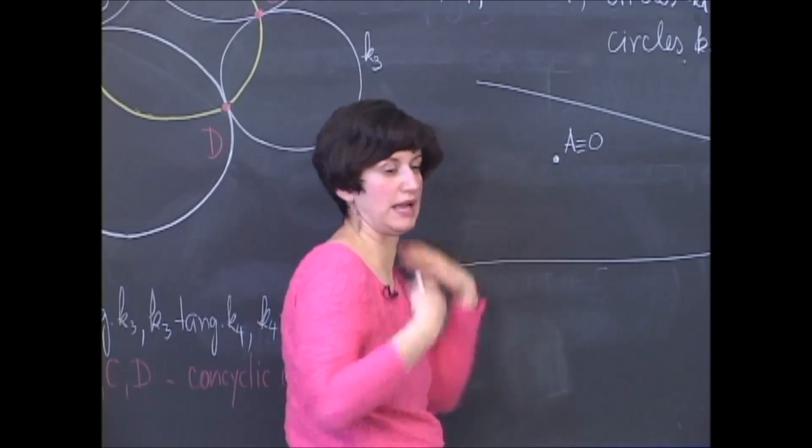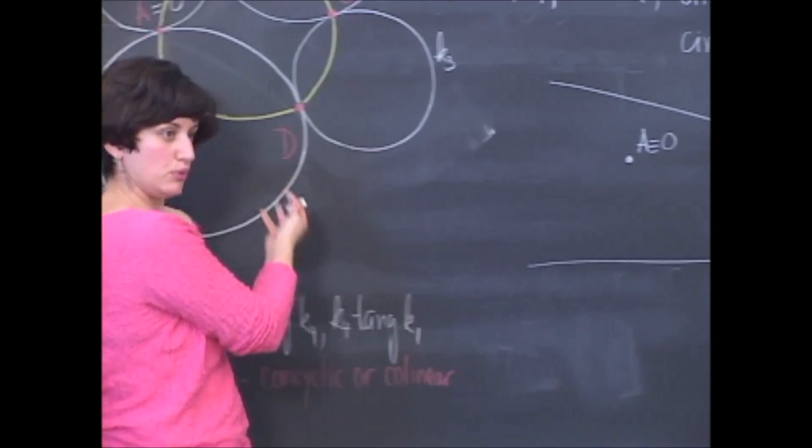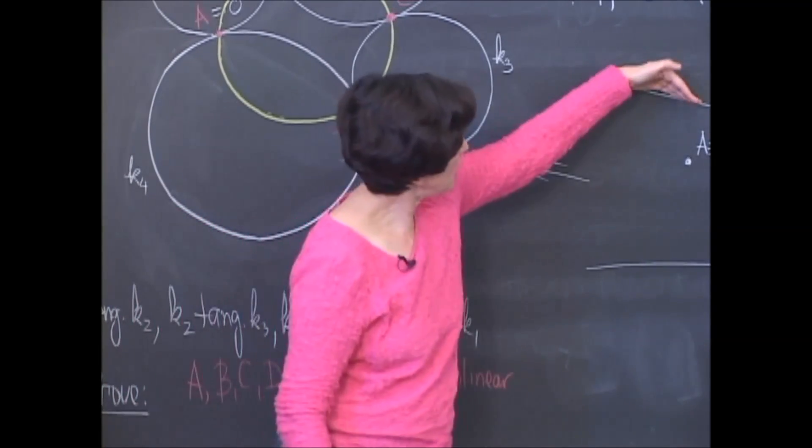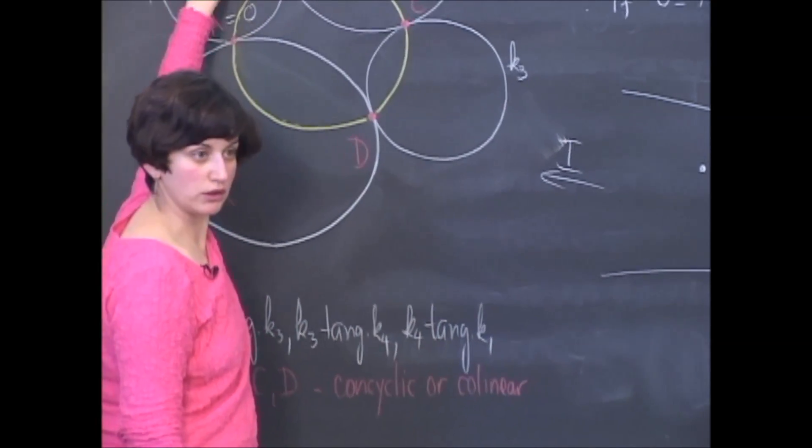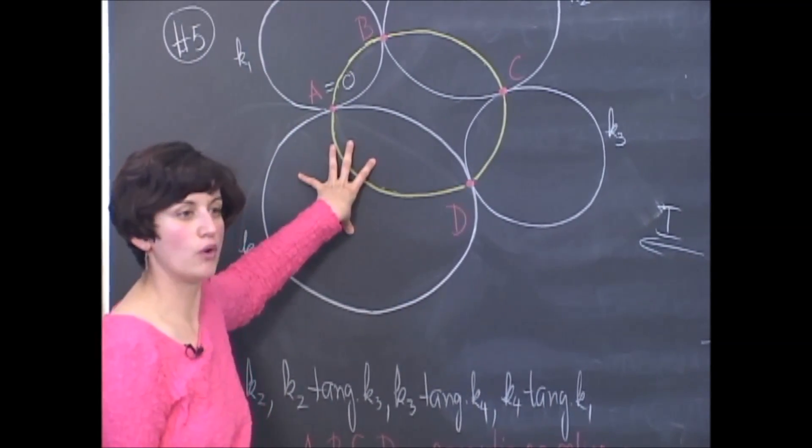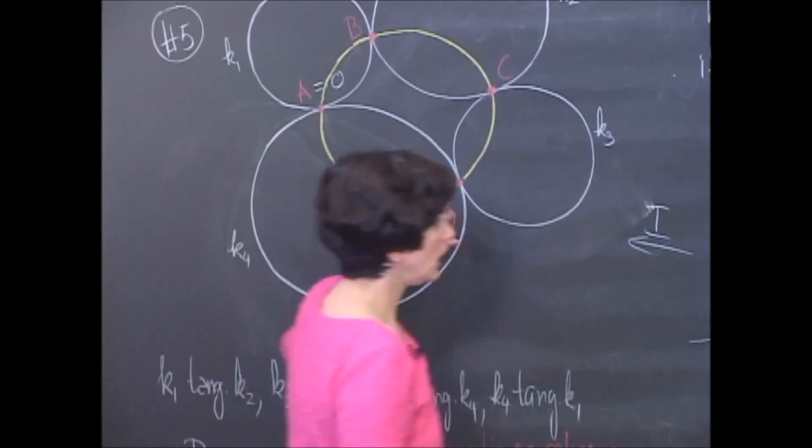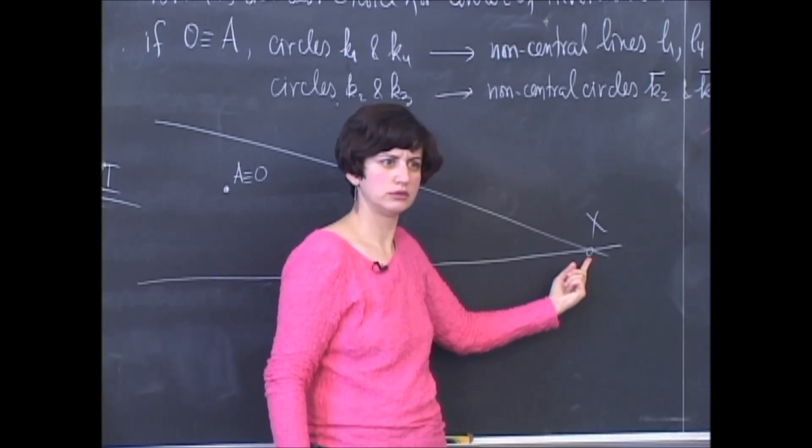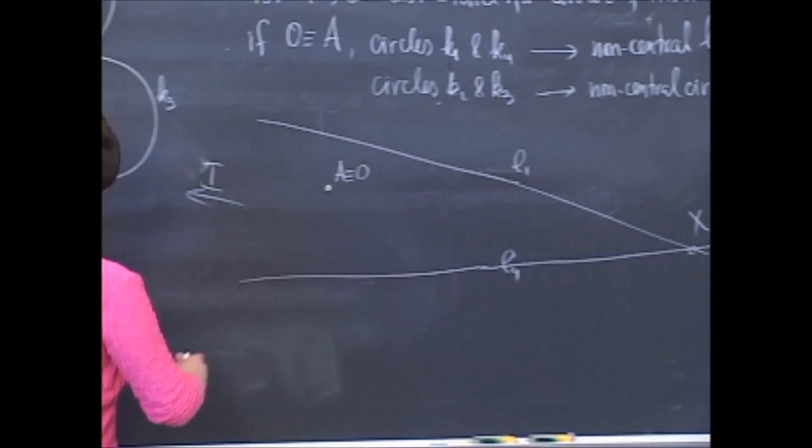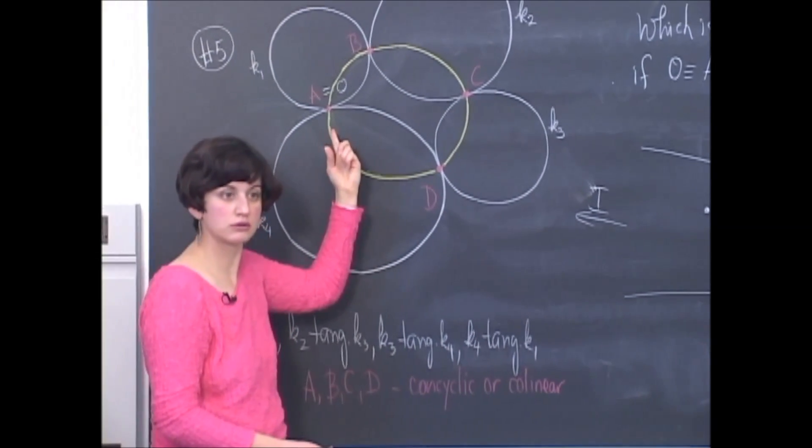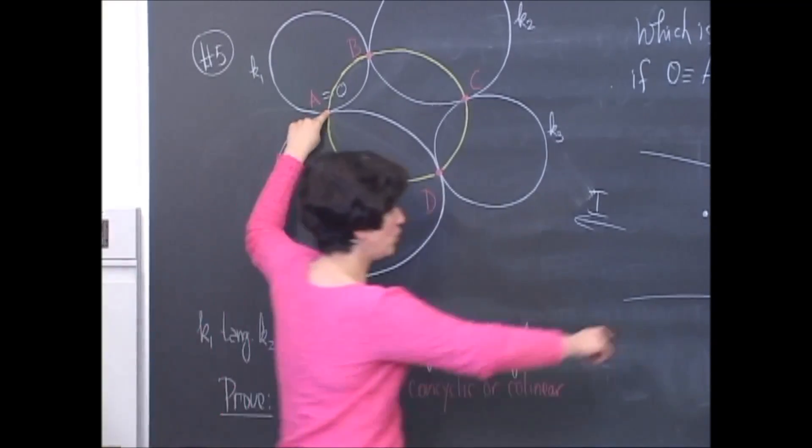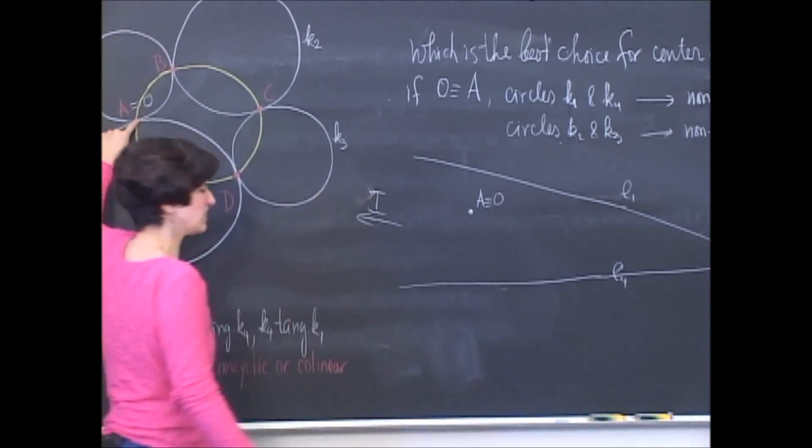Because if they indeed intersected somewhere here, apply back inversion. You can apply it forward. Apply it once again. You'll end up with the original picture. So line L1 is going to go back to circle K1. Line L4 is going to go back to circle K4. And what should point X go to? It should go to a point that lies on both of those circles, but there's only one such point. It's this point here. Can point X go to the center of inversion?